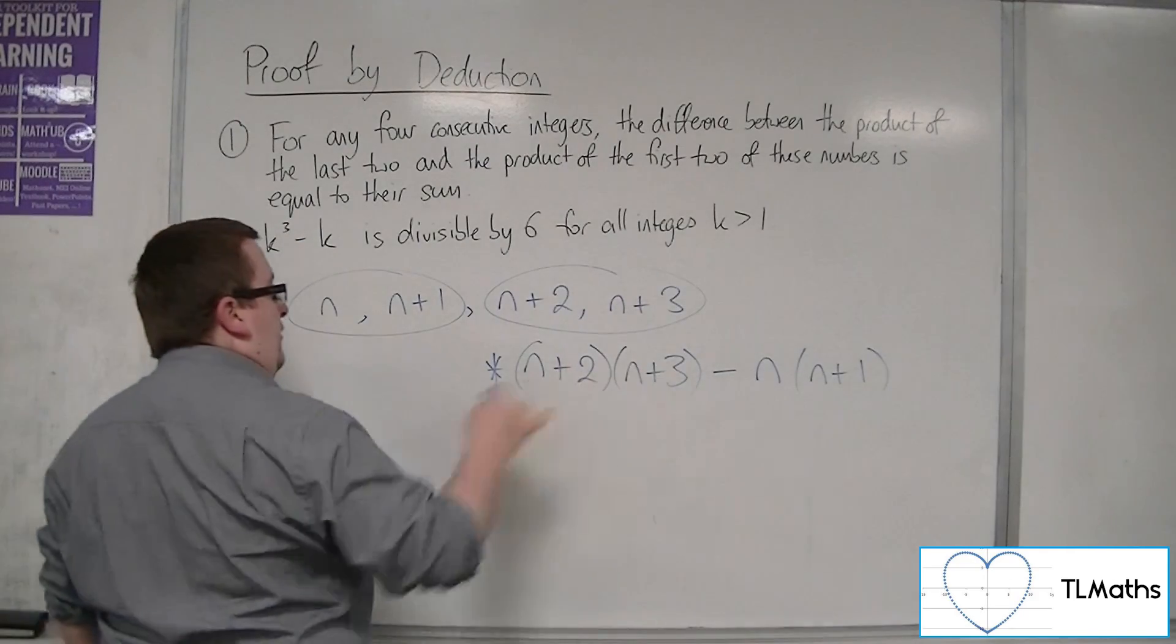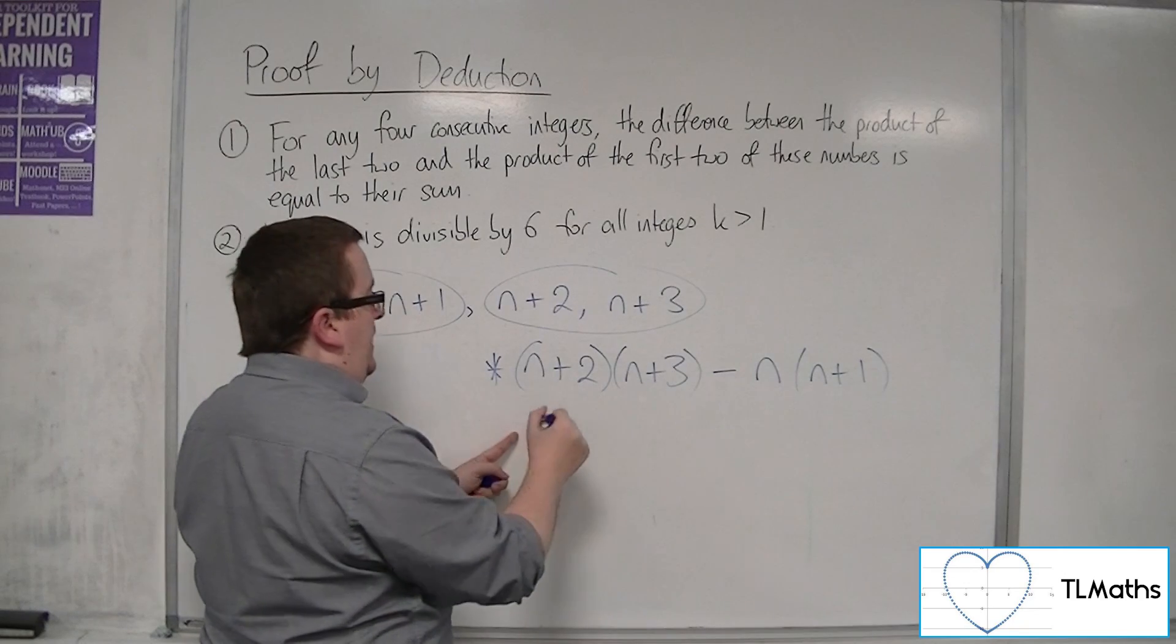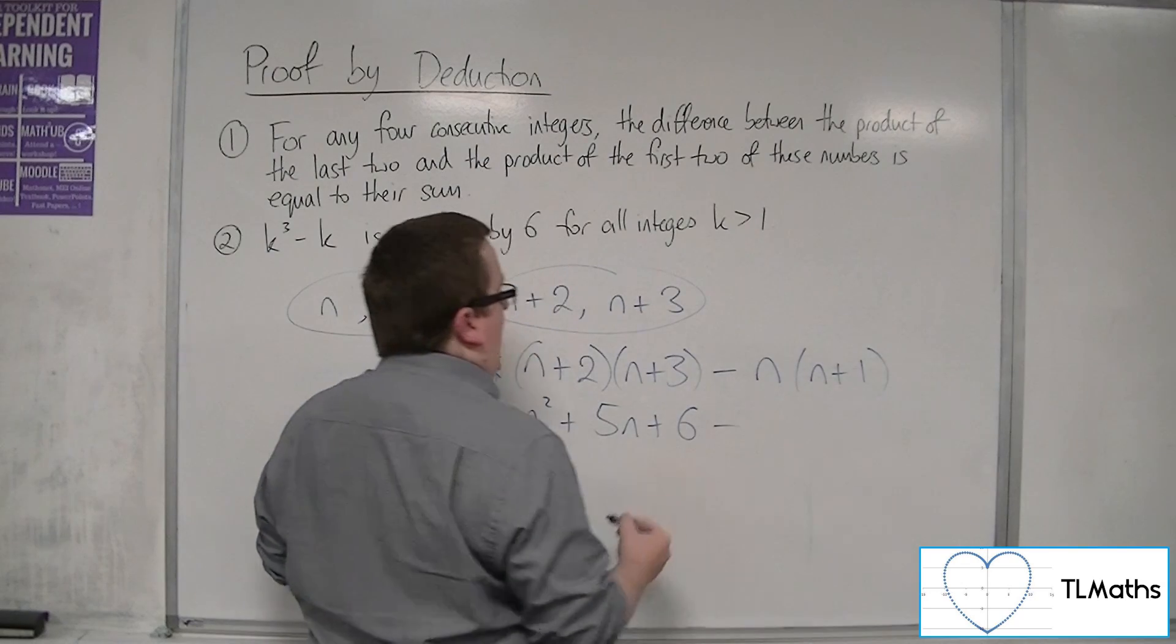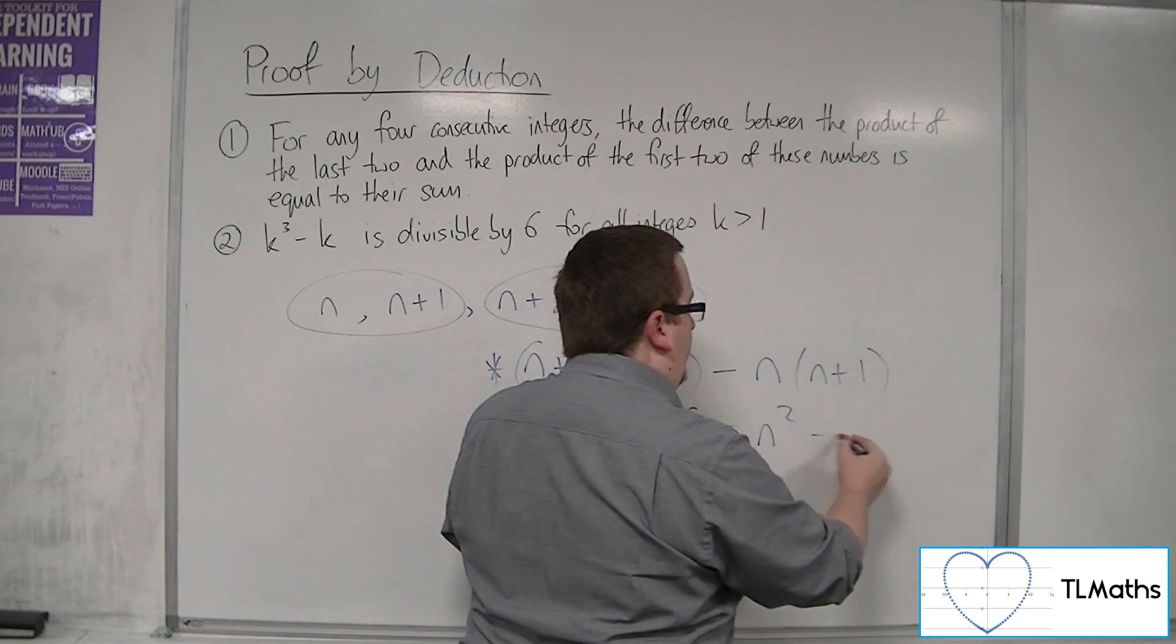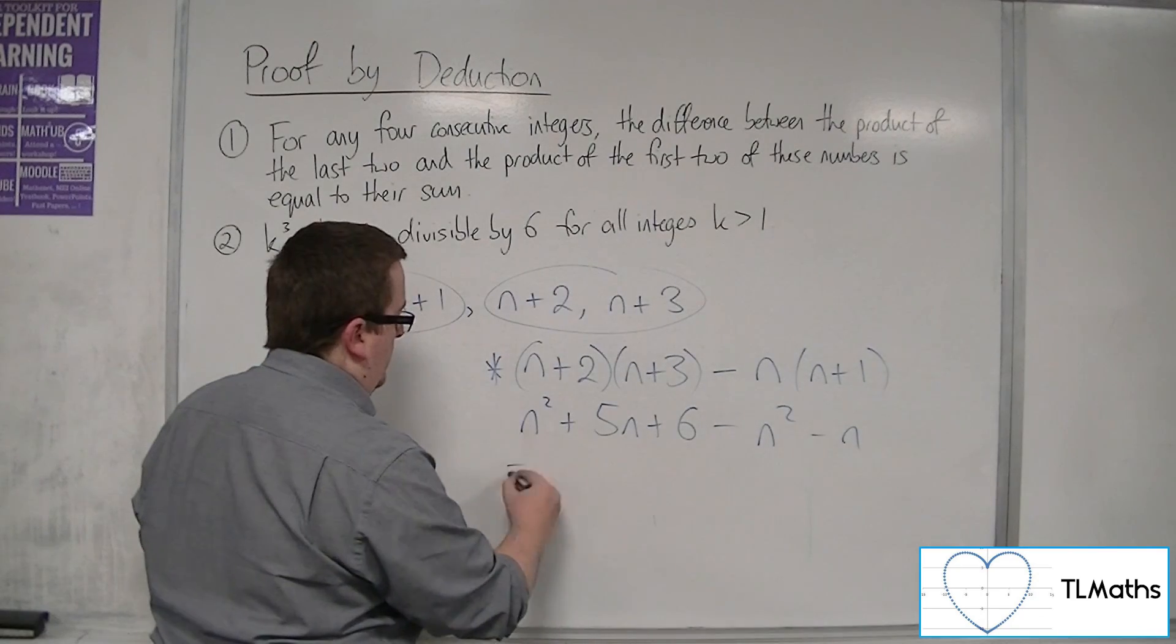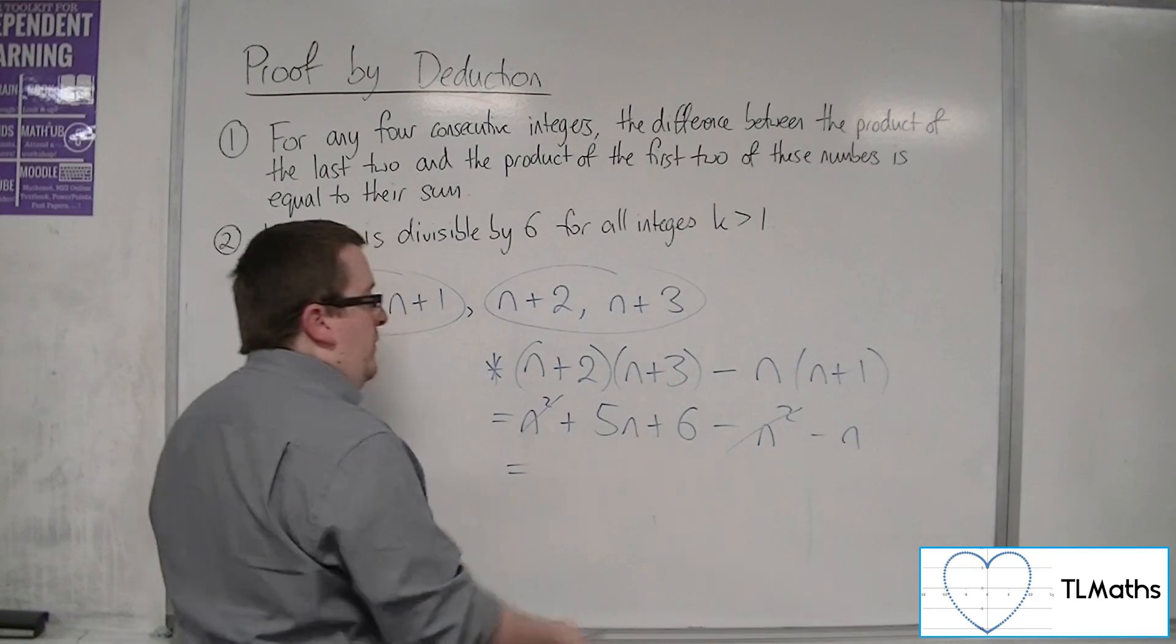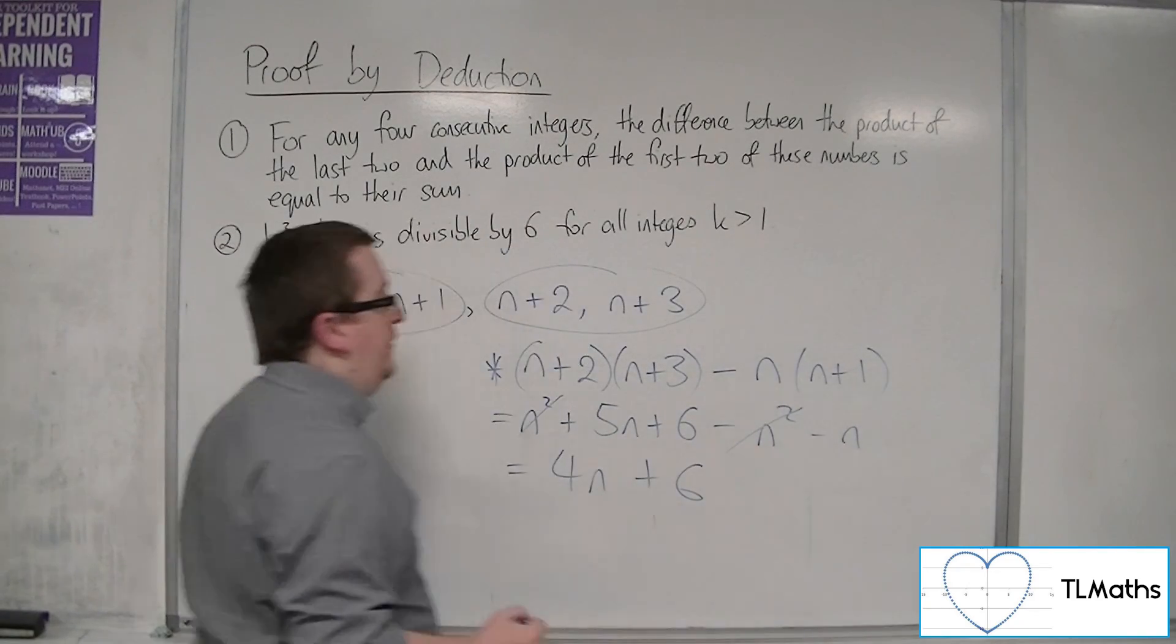So this is the first one to have a look at. So we're going to expand those brackets out. n squared plus 5n plus 6. And we've got n squared, and we've got minus n times 1, so minus n. So the n squareds are going to cancel. We've got 5n take away n, so 4n. And we've got that plus 6.